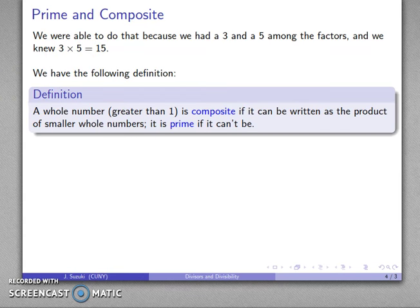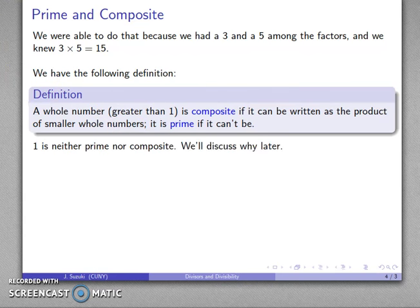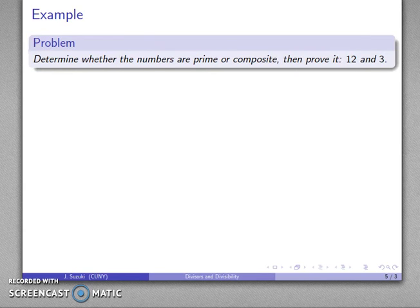So that suggests another definition, which is the following. A whole number greater than 1, and that's an important restriction, a whole number greater than 1 is composite if I can write it as the product of smaller whole numbers. It's prime if it can't be. So 1 itself is not considered prime or composite. We'll discuss the reasons for that later. It has to do with the fundamental theorem of arithmetic. So let's take a look at that.